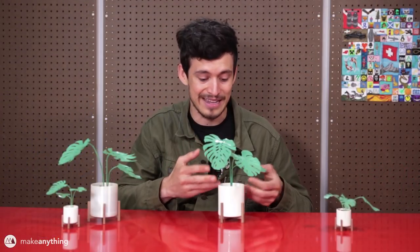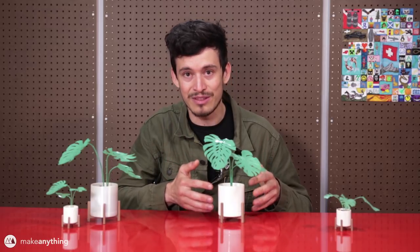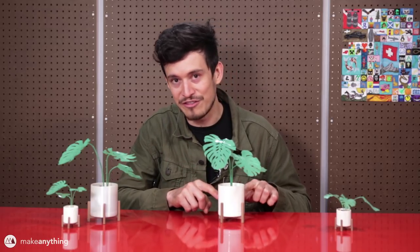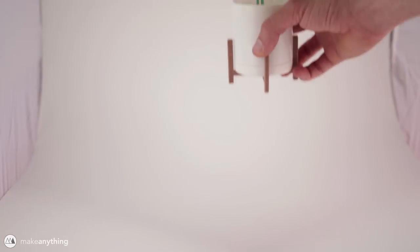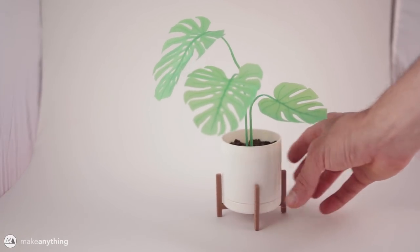So we've got thermochromatic PLA, we've got PolySmooth filament, we've got wood filament and all together it makes this really cute little Monstera plant.